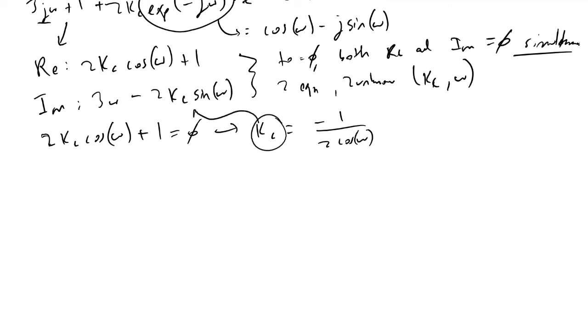Because we just evaluated what Kc is, we plug this in. We would know that 3ω minus 2, now we plug in what we just found, minus 1 over 2 cosine ω, and we have sine ω here.